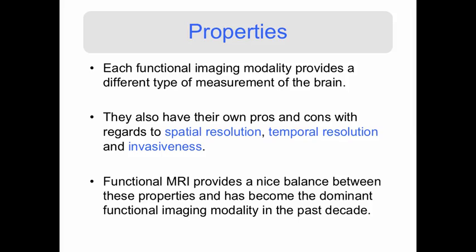Each functional imaging modality provides a different type of measurement of the brain. They also have their own pros and cons with regards to things like spatial resolution — the amount of spatial information in the image — temporal resolution, which is the precision of a measurement with respect to time, and invasiveness.